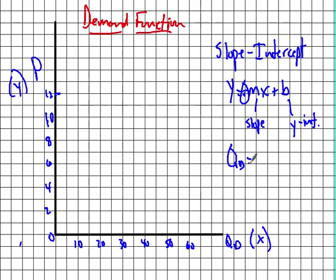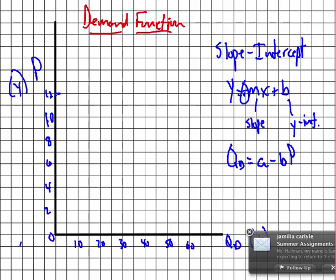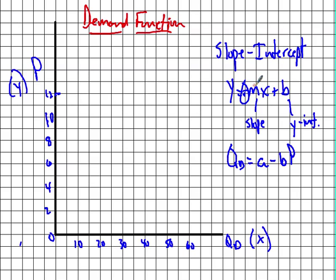In economics, the demand function is a little bit different. The quantity demanded equals a minus b times the price. In this formula, the y-intercept becomes the 'a'. Because in economics they flip the quantity — in normal math, quantity would be on the y-axis and price on the x-axis, but in economics it's opposite. So 'a' is going to represent the x-intercept, where the line crosses the horizontal axis when price is 0.